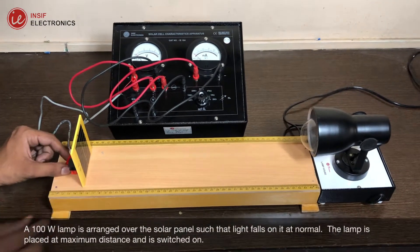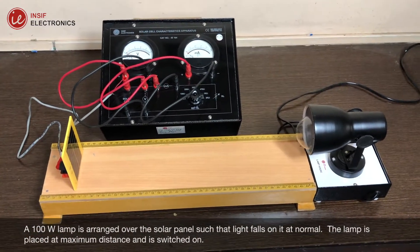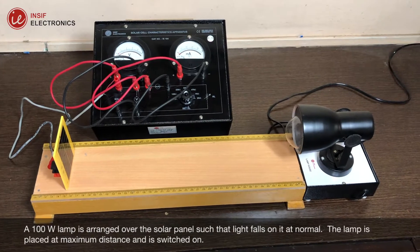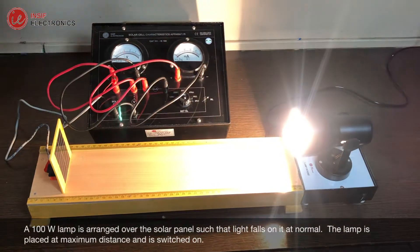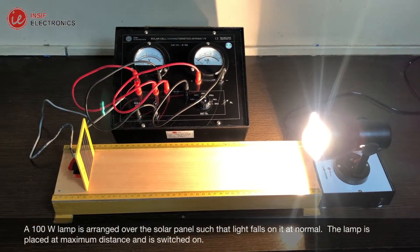A 100-watt lamp is arranged over the solar panel, such that light falls on it at normal. The lamp is placed at maximum distance and is switched on.